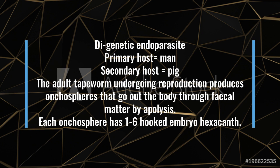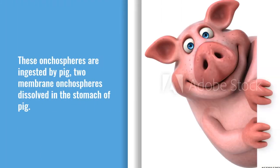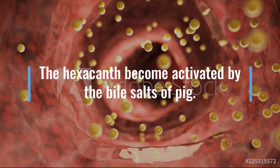Now let's trace how the tapeworm reaches from pork to man. The tapeworm is in man's intestine. The last strobila proglottids shed through the apolysis process and pass through the intestine into fecal matter. Pigs eat fecal matter, so they ingest oncospheres. Once oncospheres reach the pig's gut, the outer membranes are dissolved and the hexacanth inside is activated by bile salts present in the pig's intestine.